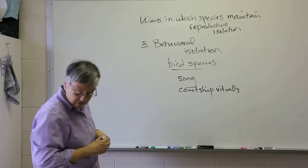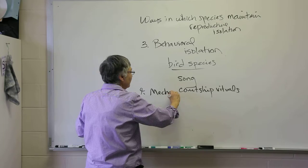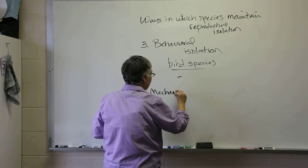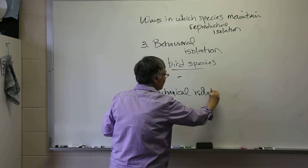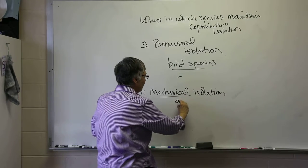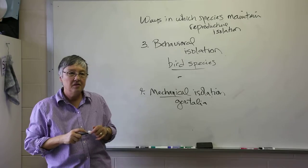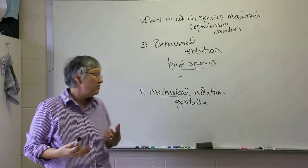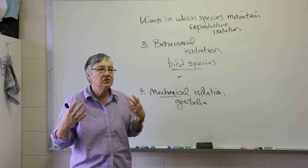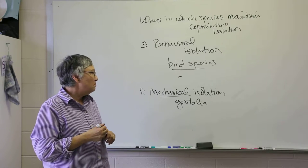A fourth category is mechanical isolation. And mechanical just refers to the structure of the male and female reproductive system, particularly the external genitalia in which structurally they're not similar, so they can't physically mate.